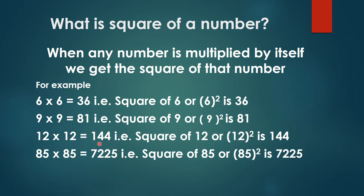If we take number 85 multiplied by 85, you can instantly say the answer is going to be 7225. That is square of 85, or 85 squared is 7225.